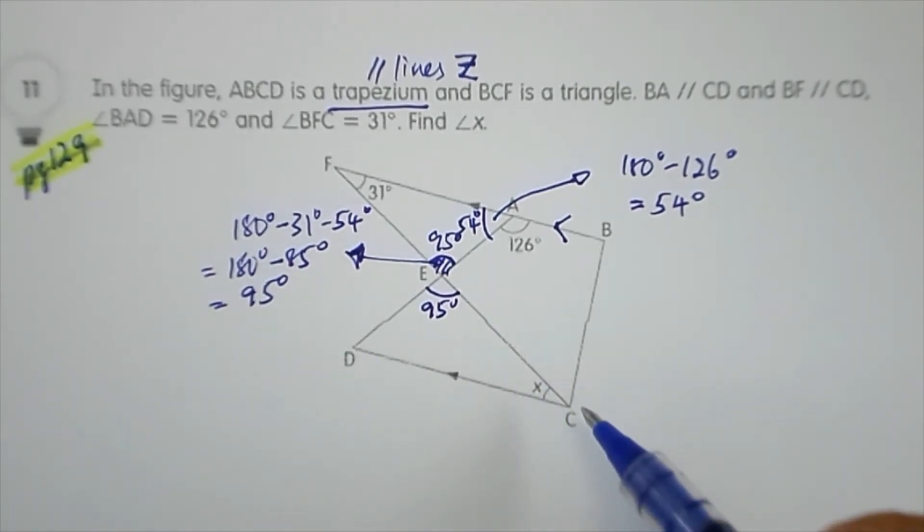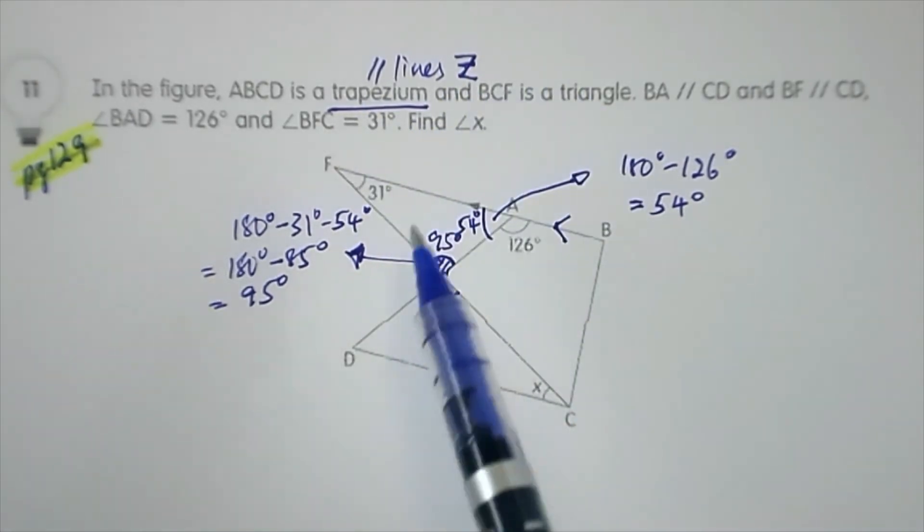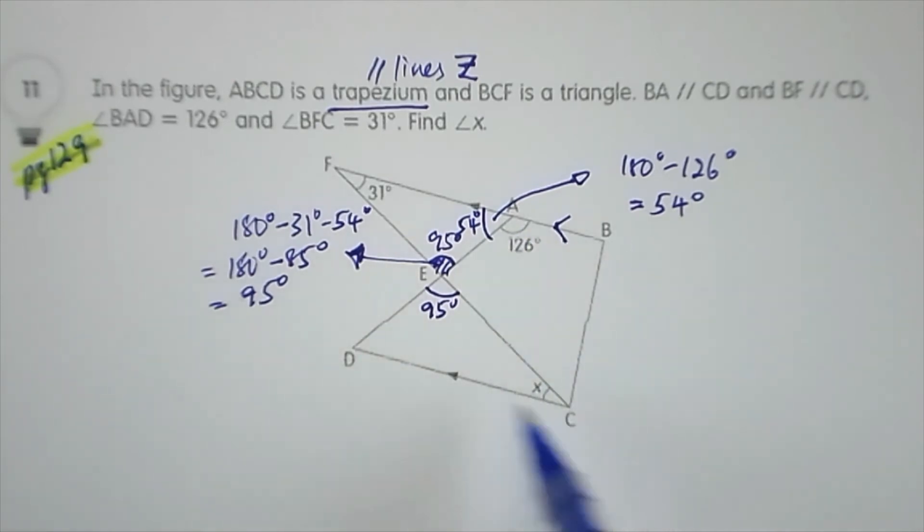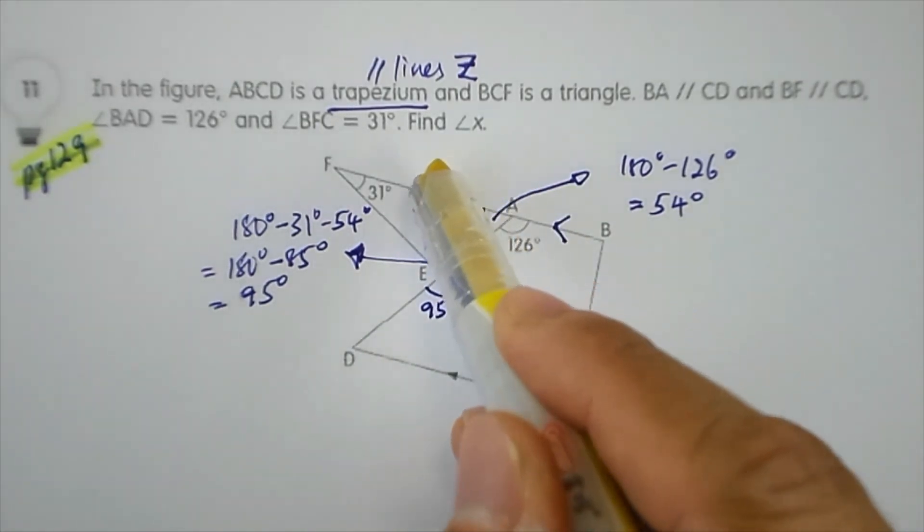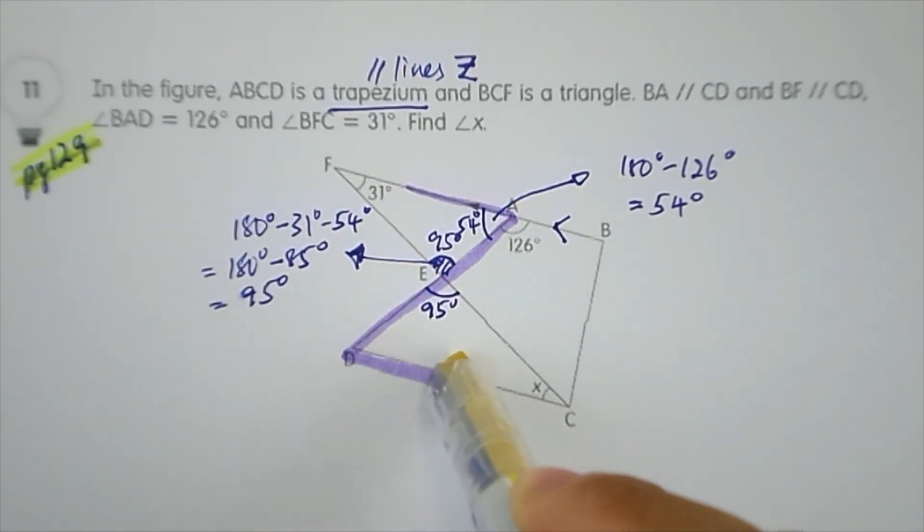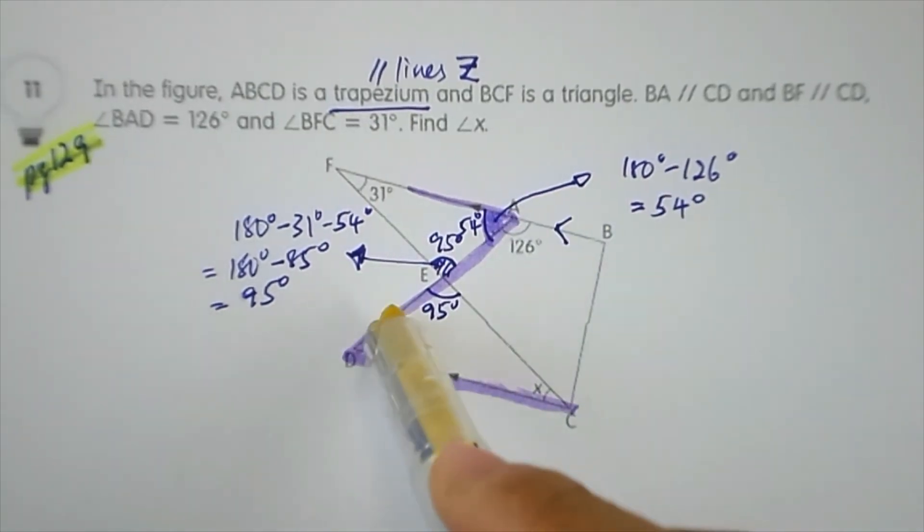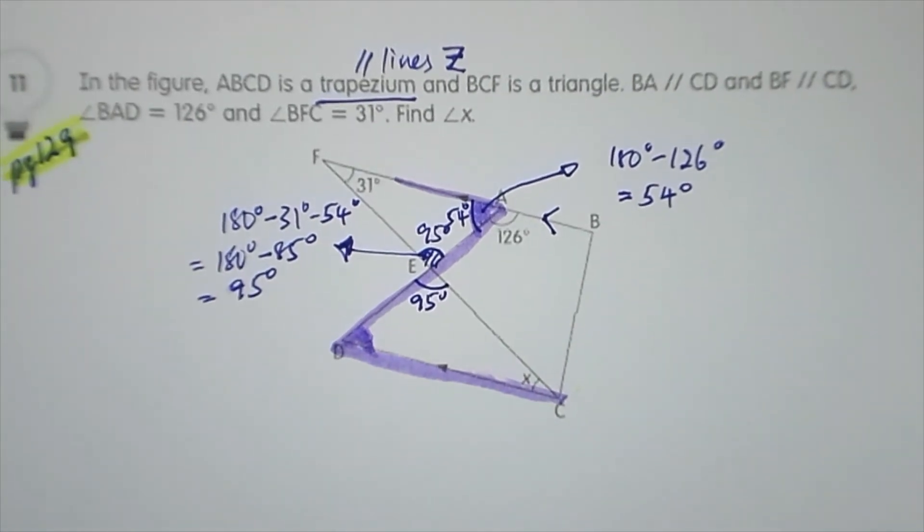The answer is found by looking for alternate angles in the Z pattern in a trapezium. In this trapezium ABCD, the Z is here. The alternate angle of 54 degrees is the same as this angle here, which is also 54 degrees.